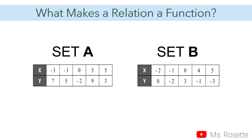Let us see this example. We have here two sets of ordered pairs, set A and set B, written in a table of values. We have to check if each x value is associated with only one y value. Negative 3 is paired with 7. Negative 1 is with 5. 0 is with negative 2. 5 is with 9. And 5 again is with 3. We have two 5s here. So this x value, which is 5, is associated with both 9 and 3.